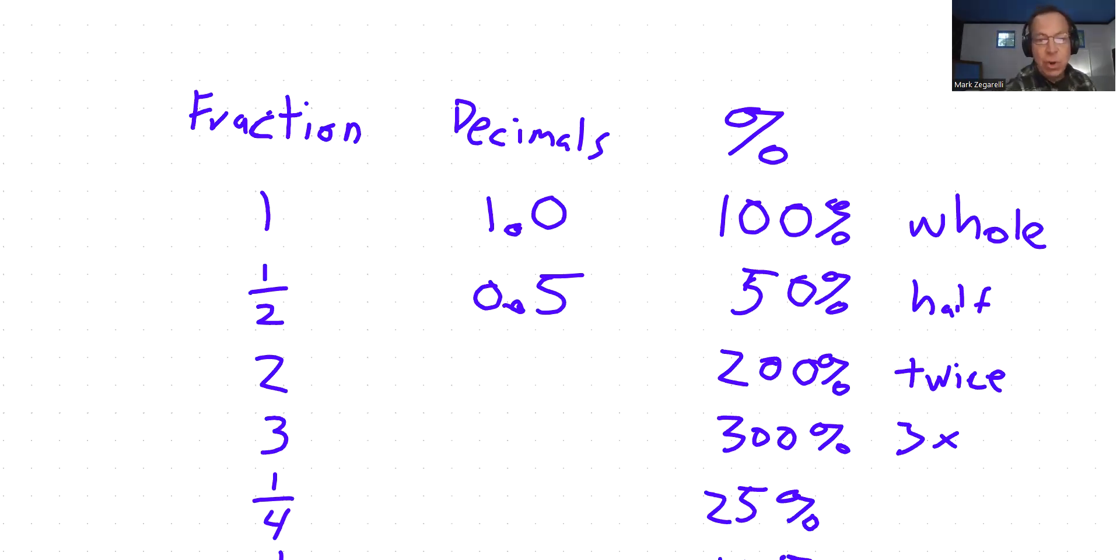Twice as much, when we're talking about 200%, 2.0, again, you could just put the zero in, don't have to, and 3.0.